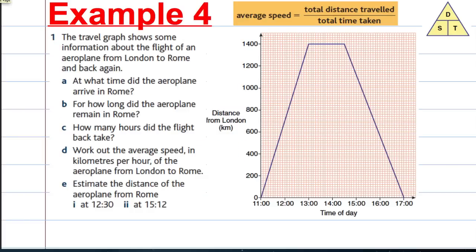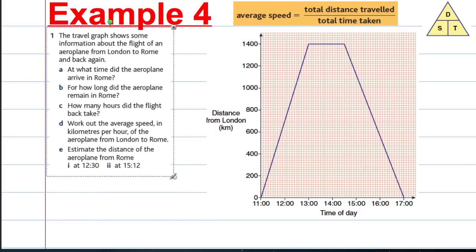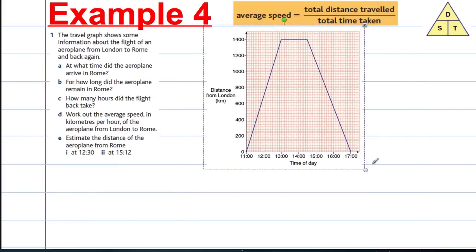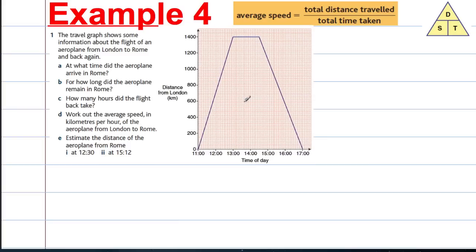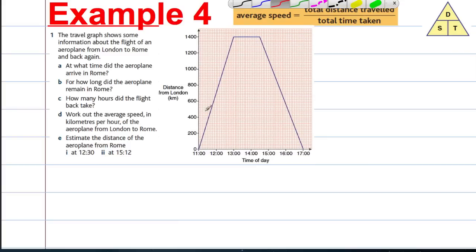Okay, and the last question. Sometimes the speed question comes up in regards to distance-time graphs. So this tells us the travel graph shows some information about the flight of an airplane from London to Rome. Let's look at this. We start our flight at 11 o'clock, we fly to Rome, presumably we stop at Rome for a period, and then we fly back to London.